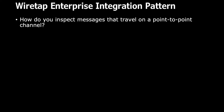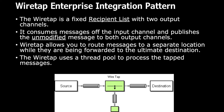In the enterprise integration pattern world, the business problem is: how can I inspect messages that travel on a point-to-point channel? Wiretap is a fixed recipient list with two output channels. It consumes messages from the input channel and publishes the unmodified message — that's the keyword — to both output channels. It doesn't inject any information or change anything; it simply creates two pipes out of one, copying data onto another pipeline.